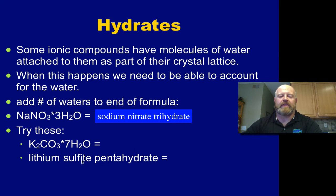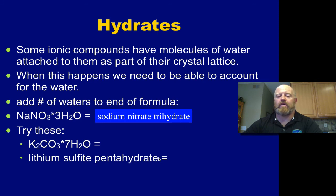Going the other direction, we have lithium sulfite pentahydrate. Lithium is Li. Sulfite is SO3 — because sulfate, A-T-E ending, would be SO4, so sulfite is SO3. Lithium's charge is plus one, sulfite's charge is negative two, so we're going to need two lithiums. Then we attach five waters for penta, giving us Li2SO3·5H2O.